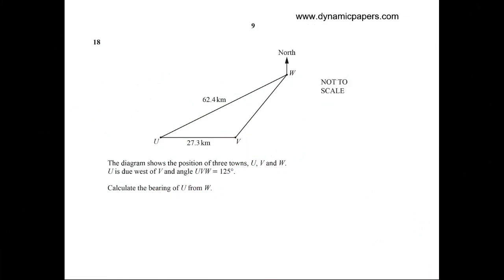Question 18: Calculate the bearing of U from W. From W, we move across to line UW using trigonometry. Angle UVW equals 125 degrees. Using the sine law...